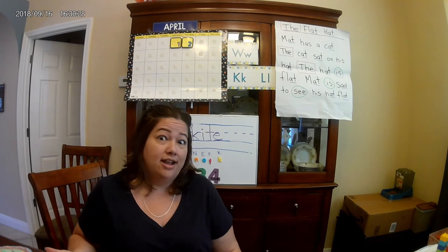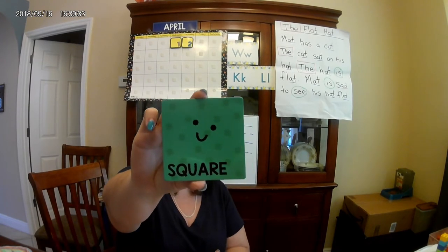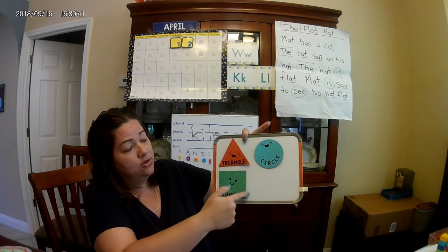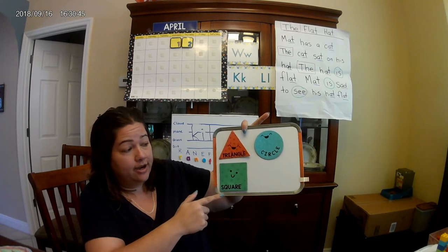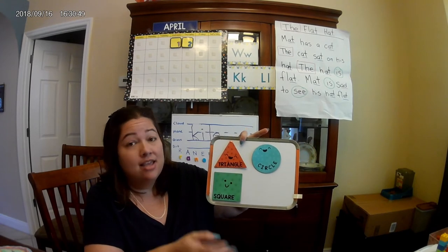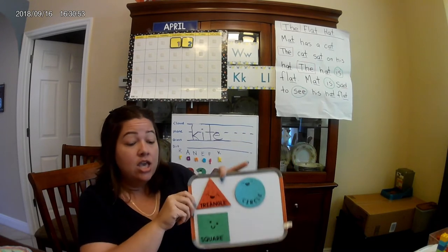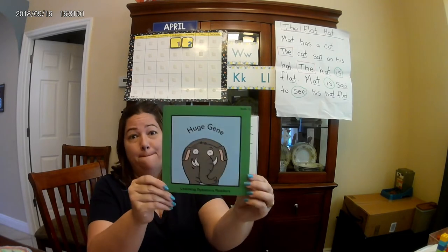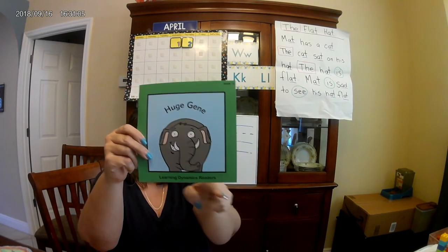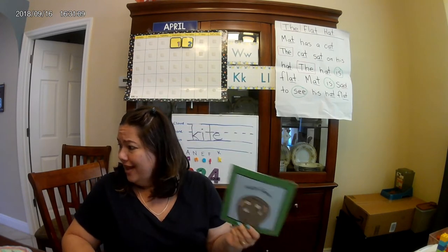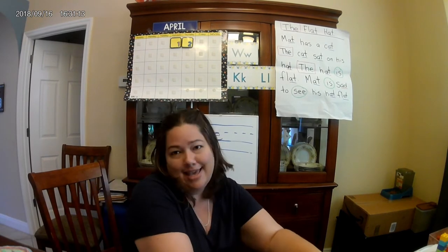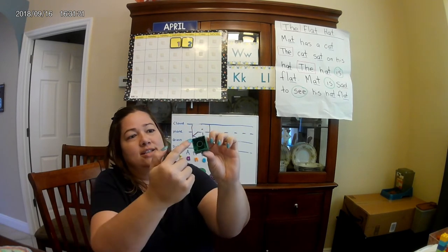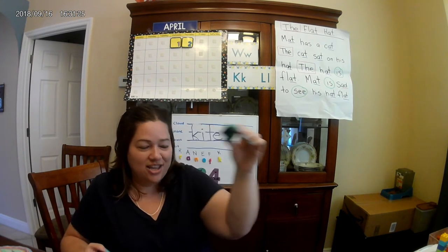Our next shape is a square. A square has four sides — let's count them together: one, two, three, four sides. And all four of those sides are the same length — they're equal. So square means all sides are equal. This one might be a little hard to find, but I was able to find a square book: one, two, three, four sides, all equal. And I found one more thing we've been using in our videos — a square block: one, two, three, four sides, all sides equal.